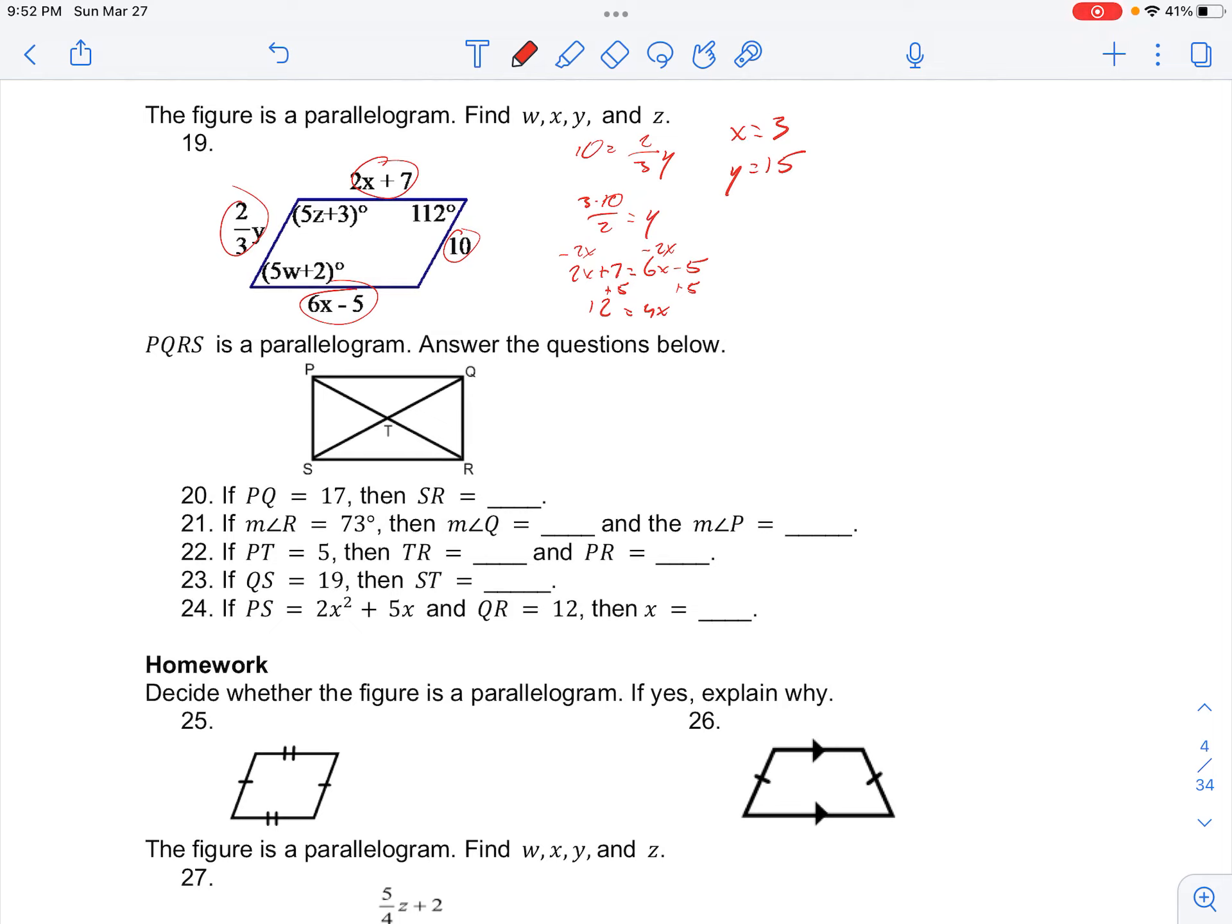We have the opposite angles of parallelograms are congruent. So we can set 112 degrees equal to 5w plus 2, subtracting 2, we have 110 is equal to 5w. And dividing by 5, we get that w is equal to 22. So if w is 22, then we're left with only to find z.